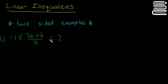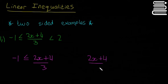That makes it a two-sided example. The way you're going to solve ones like this is you're going to break it up into two chunks. The first one is just the left-hand side: -1 ≤ (2x+4)/3. And then on the other side you're going to write (2x+4)/3 < 2.